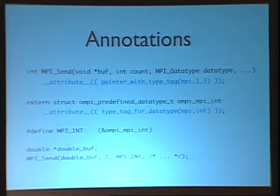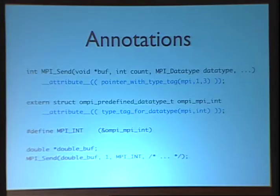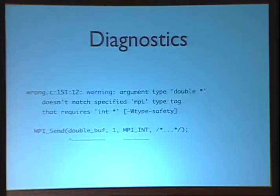Here are our annotations. We annotate all the communication functions with the pointer_with_type_tag attribute. We specify the index of the buffer pointer and the argument index for the type tag. All the type tags are also annotated with the type_tag_for_datatype attribute, so that the type tag value can be matched to the corresponding C data type. So in this case, we have the MPI_Send function call that accepts a pointer to a double buffer, and we pass the MPI_INT constant. MPI_INT expands to the location of the OMPI_MPI_INT data type, and it has this data type tag. So the compiler has all the required information to type-check this call, and in this case we will emit a diagnostic saying that you have a double* pointer but your type tag requires an int* pointer.